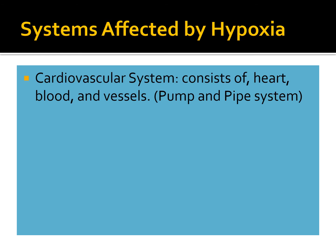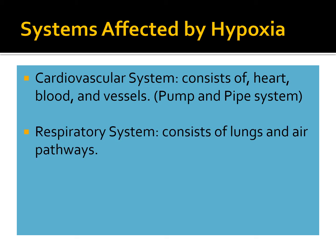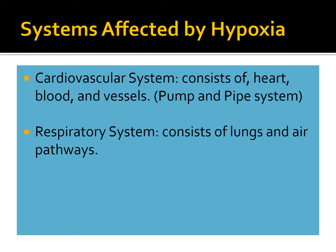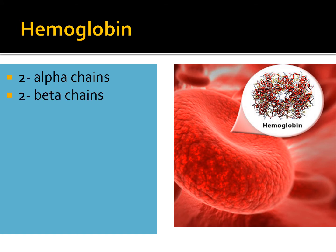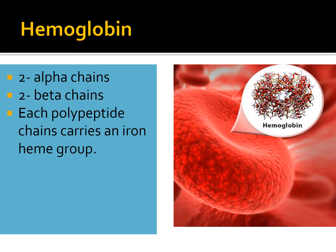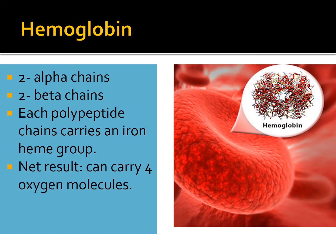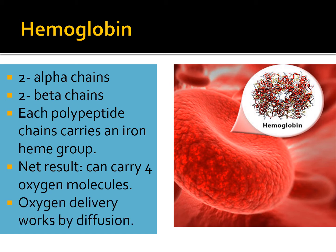The systems in your body affected by low oxygen environments include the cardiovascular system — your heart, blood vessels, and blood — the respiratory system consisting of your lungs, air pathways, and hemoglobin, the protein that carries oxygen to tissues throughout the body. Hemoglobin consists of two alpha chains and two beta chains; each polypeptide chain carries an iron heme group, allowing us to carry four oxygen molecules per hemoglobin molecule. This oxygen delivery system works by simple diffusion across cellular surfaces.